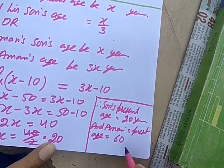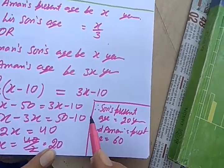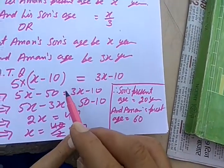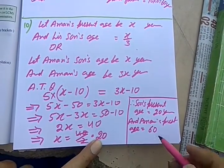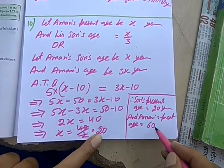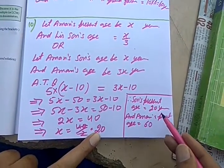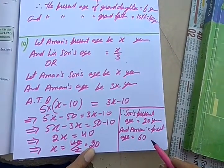How do you know whether your sum is correct? See, he has told you that ten years ago, this age was five times. Ten years ago, how much was this age? 10. How much was his age? It was 50. And it was five times. Therefore, our solution is correct.